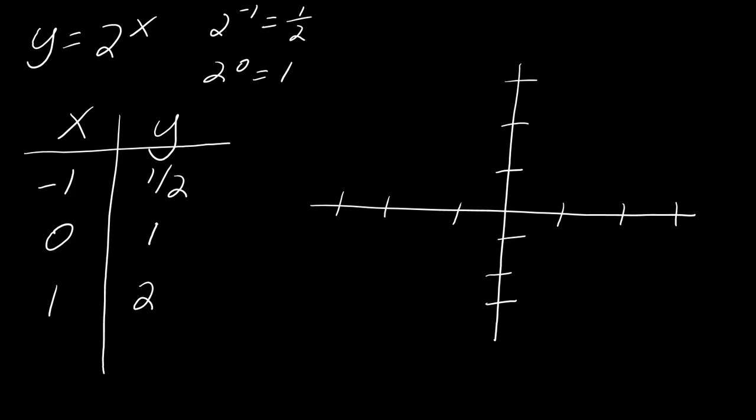So I have three points here just to kind of get this party started. So I've got negative 1, 1 half, so that's right about here. 0, 1, and then 1, 2. Okay, so there are three points.